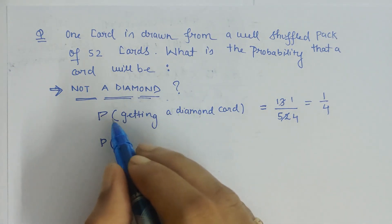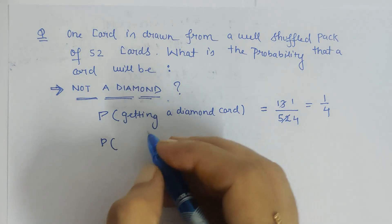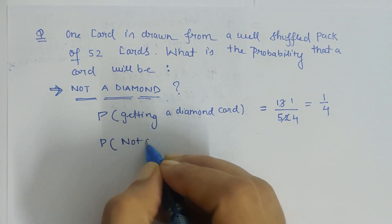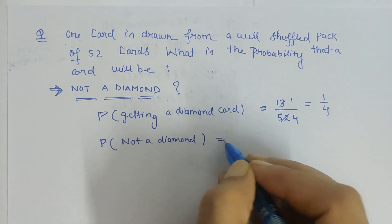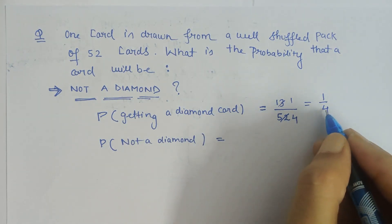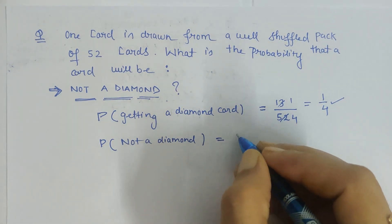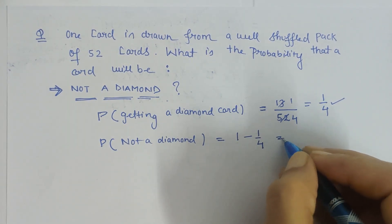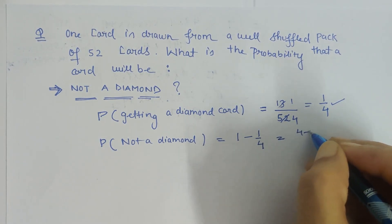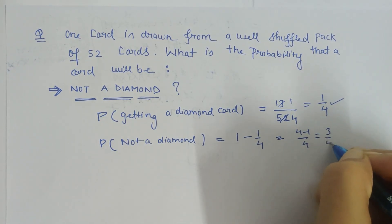1 minus 1/4 gives us (4 minus 1)/4, which is 3/4. So 3/4 is the solution for the probability of a card drawn which is not a diamond.